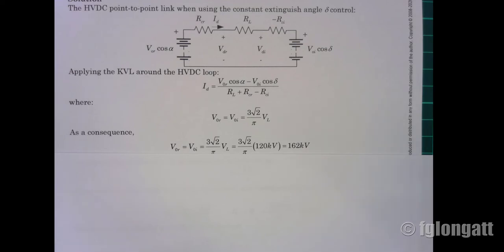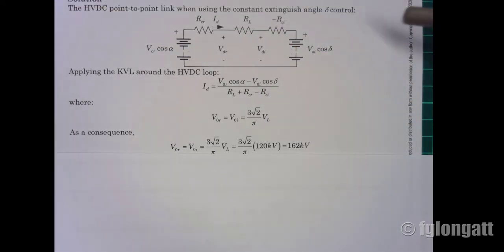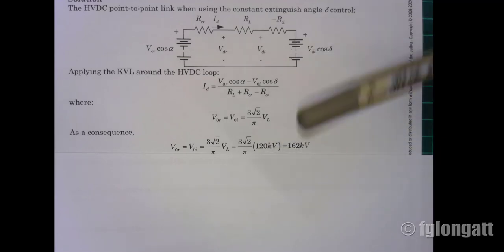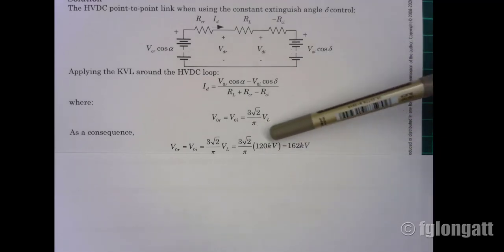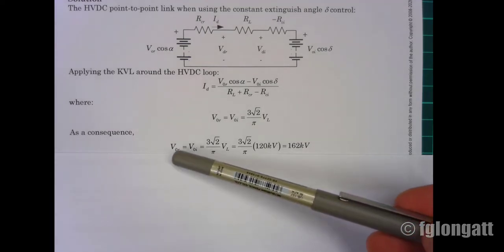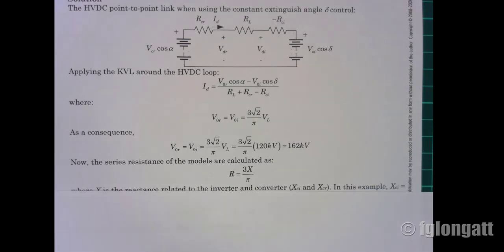We know the voltage on the AC side is V_L = 120 kV. This circuit represents only the DC side, but we know from the statement that both the inverter and rectifier are supplied from a 120 kV line-to-line voltage. For that reason, the no-load DC voltages V_0r and V_0i are both 162 kV.